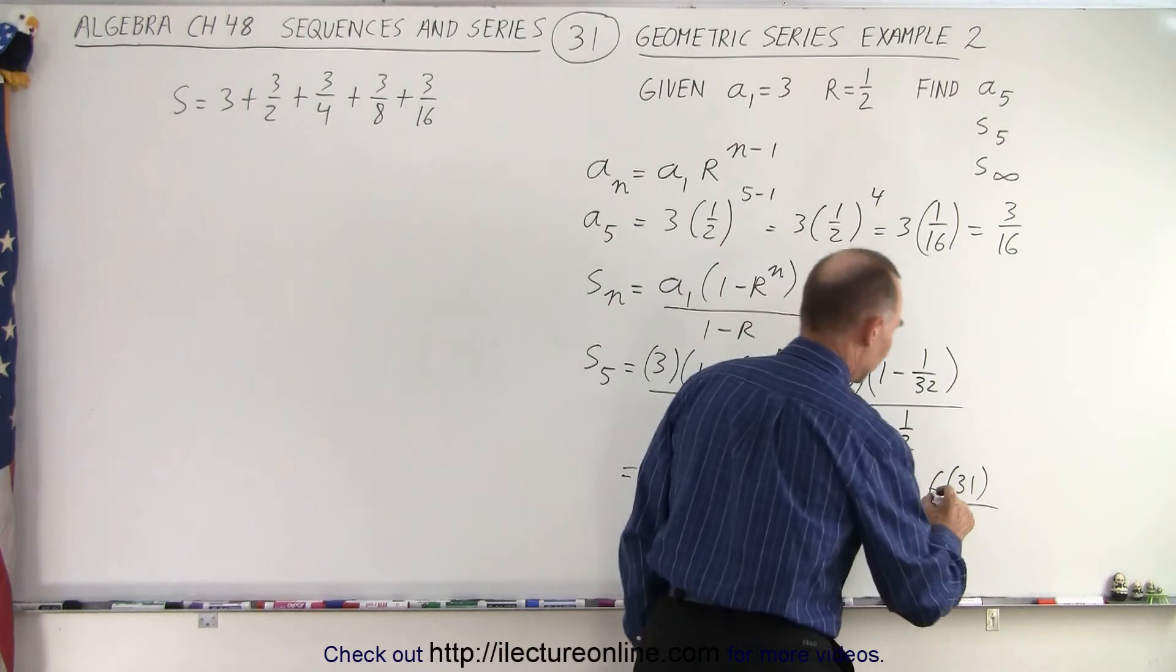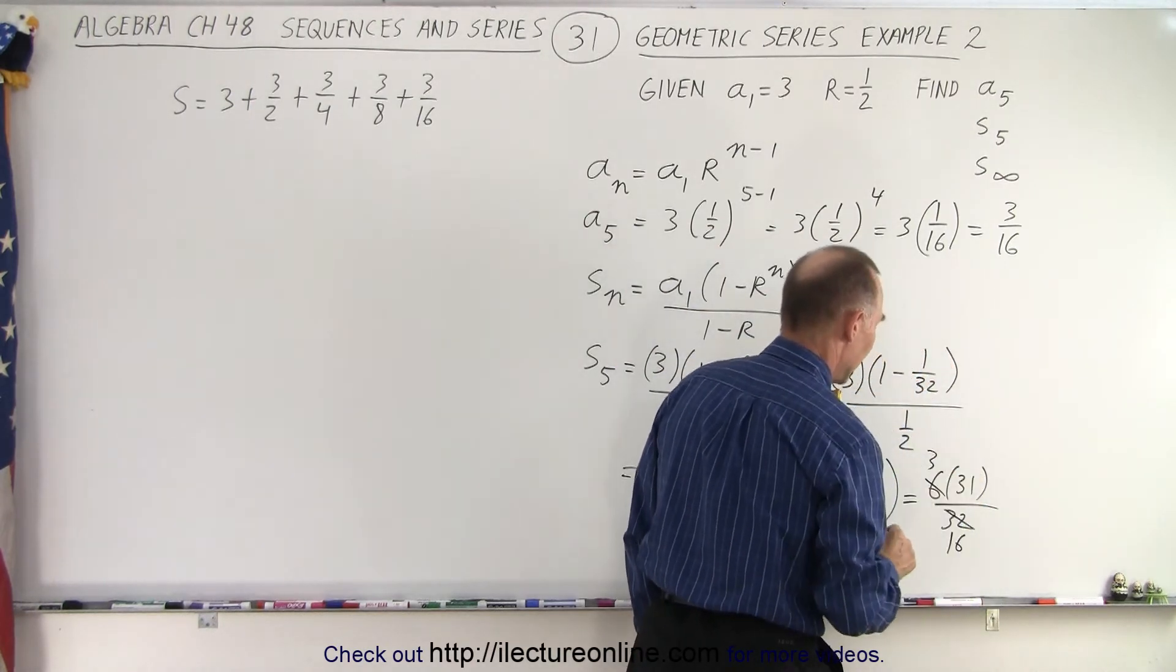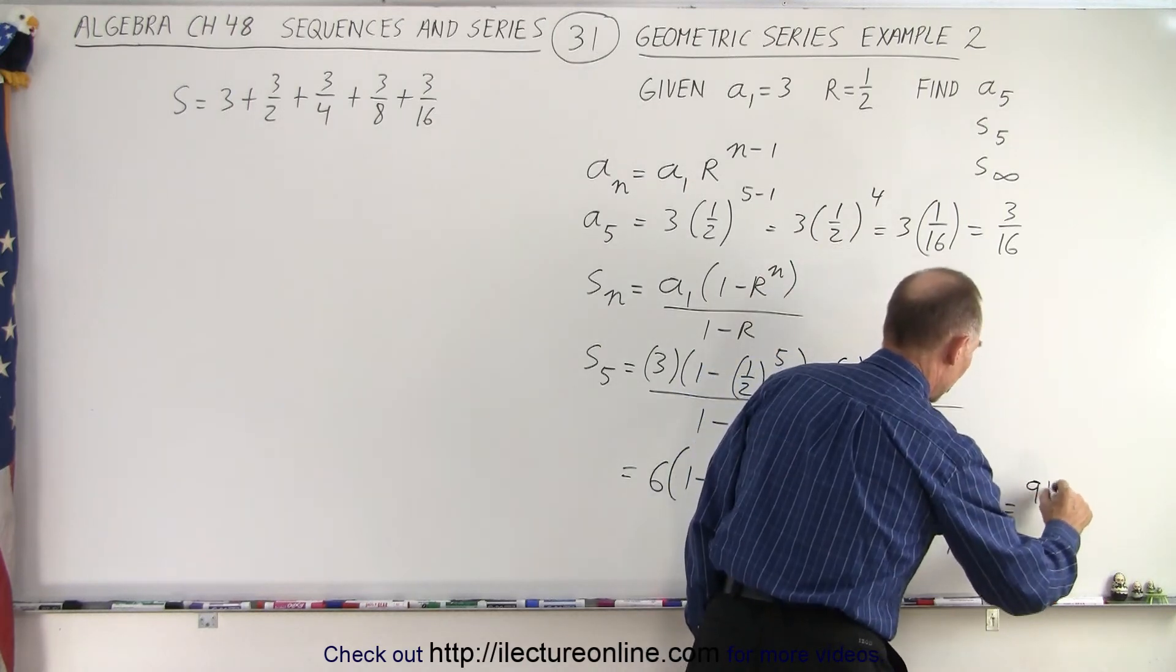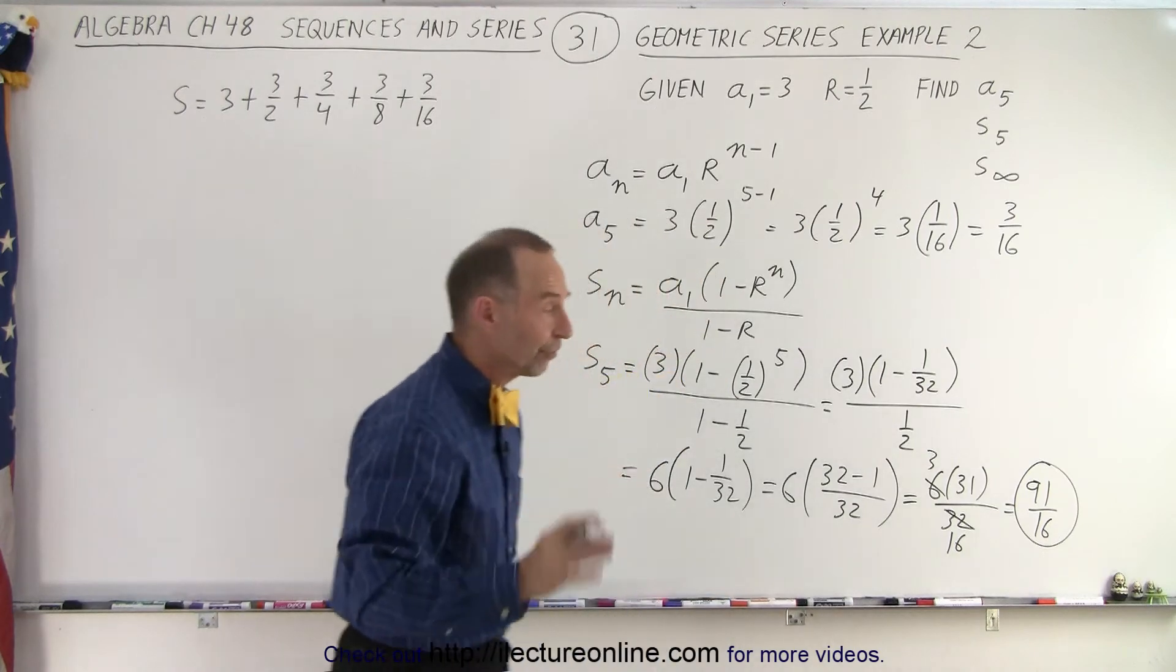And so that would be 6 times 31 over 32. And 6 and 32, they're both even. So that would be 16. This would be 3. And so that would be equal to 93 divided by 16. And that would be the sum of the first five terms.